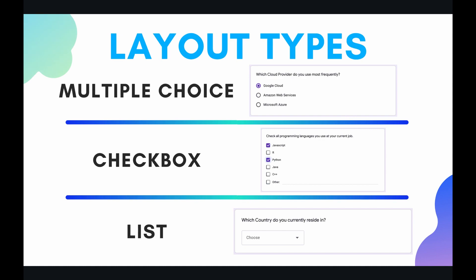You have the generic multiple choice item, which you can see on the top rung of our three-tier ladder. The multiple choice item is basically where you ask a question and provide the respondent a list of selections, and the respondent has to choose one and only one of those selections.